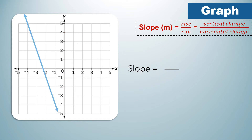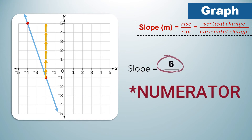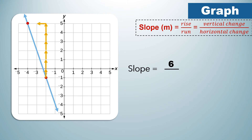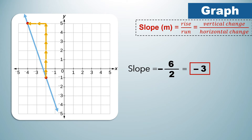Let us have the second example. We will use rise over run to identify the slope. Locate any two points on this graph. Count the vertical change, or the rise: 1, 2, 3, 4, 5, 6. The rise is 6. Then count the run: 1, 2. As you can see, the direction of this line is going to the left, therefore the slope will be negative. The horizontal change is 2. So the slope of this given line is negative 6 over 2, which is equal to negative 3.